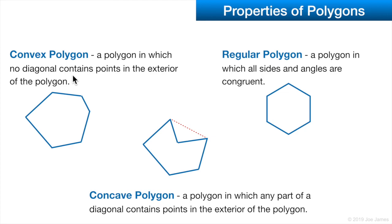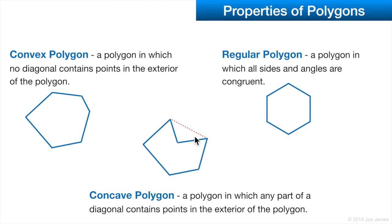A convex polygon is one in which no diagonal contains points in the exterior of the polygon. A diagonal is a segment that connects any two non-adjacent vertices — it passes through the middle of the polygon. With a concave polygon, you can connect two vertices with a segment and enclose points that are outside the polygon. That polygon is concave; the other is convex.